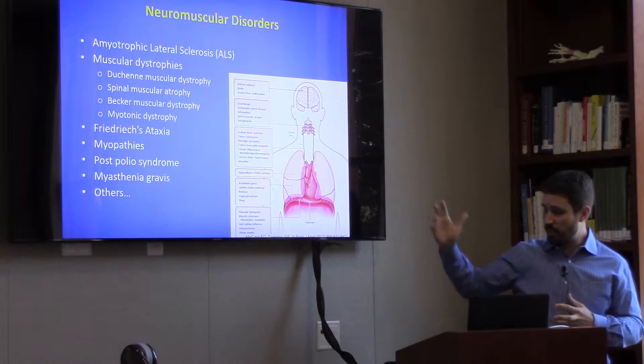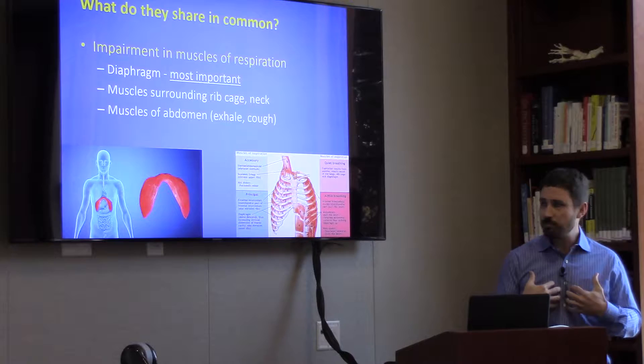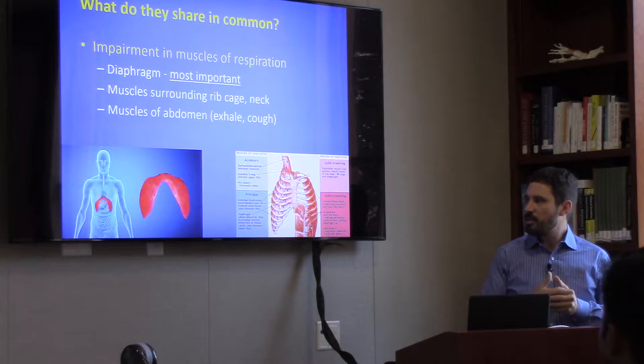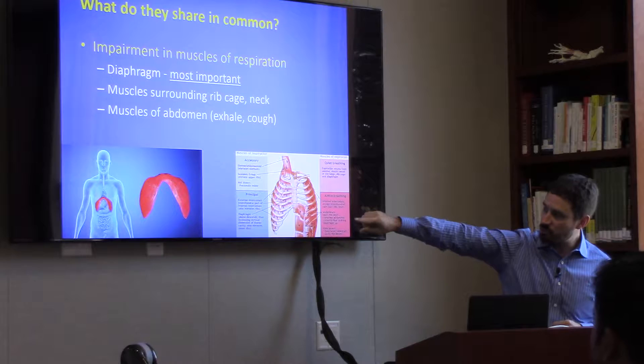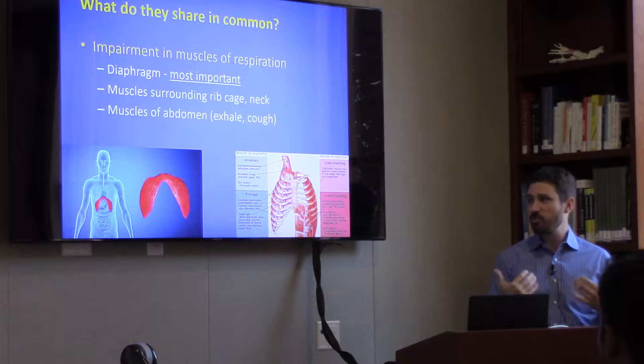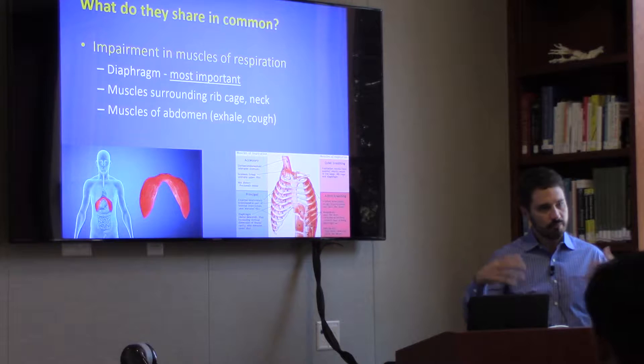The most important muscles from our standpoint really have to do with the ones that help you breathe. All the ones that surround the rib cage are very helpful not only with inhalation but also exhalation. But really, when we're talking about the most important muscle of all, it's the diaphragm — that dome-shaped muscle that sits underneath the chest, in between the chest and the belly. As that muscle contracts, it pulls everything down, opens up the lungs, and lets air go in.